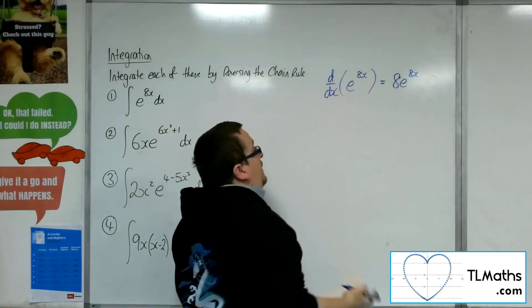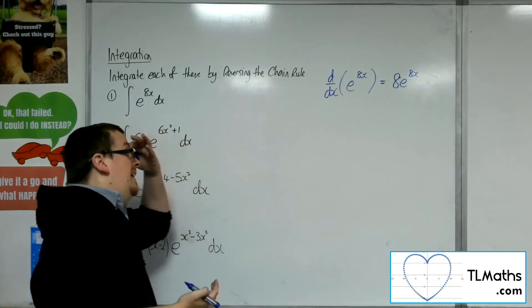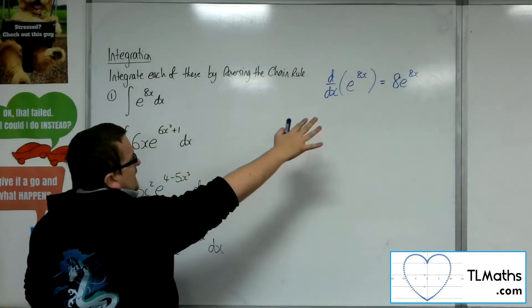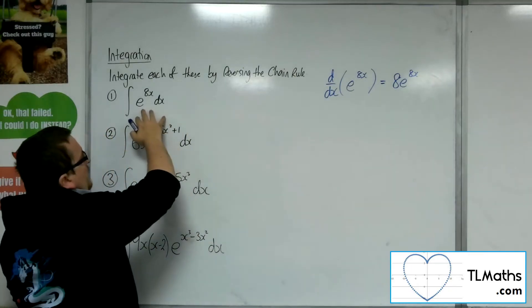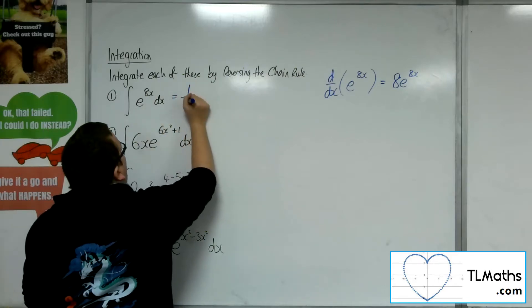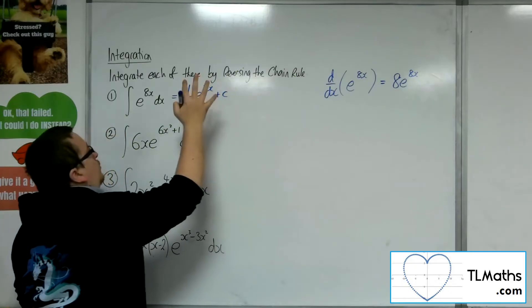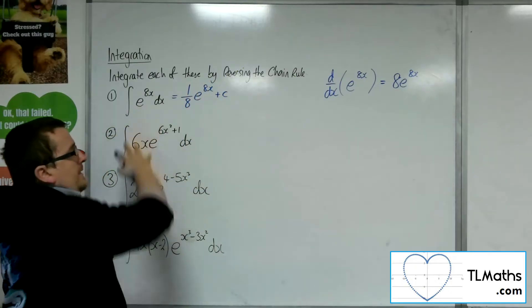OK, so the derivative of what's inside comes outside, and e just stays as it is. So I've got 8e to the 8x there, so I've got 1 eighth of what I need. So this will need to be 1 eighth e to the 8x plus c in order for that to differentiate to that.